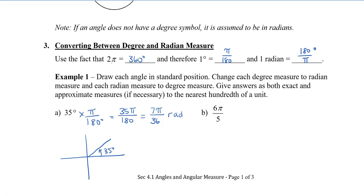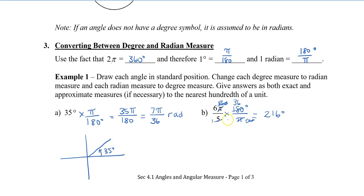In the second example, I have 6π divided by 5. Because it doesn't have the degree symbol, we assume this is in radians. To convert to degrees, I multiply by 180 degrees over π, and the π's cancel off. So 5 goes into 180 36 times, and 6 times 36 is 216 degrees. Just like over here, we can have the degrees cancel off in the same way that units cancel in chemistry.